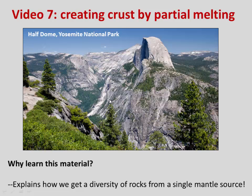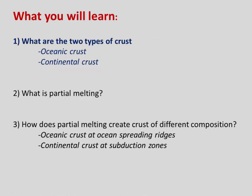The answer to that question is the process of partial melting. So in this video, we're going to go through how you make Earth's crust through the process of partial melting. The video will have three parts: first we'll talk about what are the two types of crust; then we'll talk about what partial melting is; and then we'll look at how partial melting creates crust of different composition, specifically oceanic and continental crust.